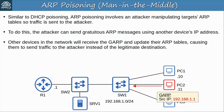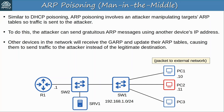For example, attacker PC2 sends a gratuitous ARP message using the IP address of the default gateway R1. It is flooded through the network and all devices receive it, so they update their ARP tables to map PC2's MAC address to the IP address 192.168.1.1. R1 doesn't update its own ARP table because 192.168.1.1 is its own IP address. Now if PC1 wants to send a packet to an external network, it is sent to PC2 first. PC2 can save a copy of the message and then forward it to the legitimate default gateway R1 — this is a man-in-the-middle attack.